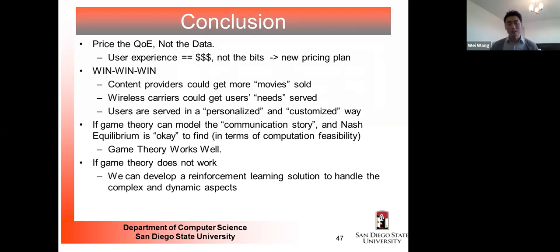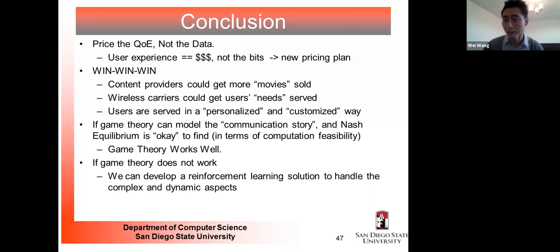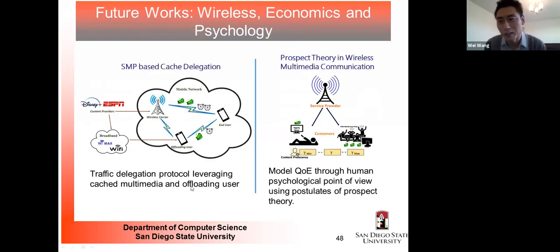In summary: using economic theory to design wireless networks, we price QoE-aware data — recognizing that different bits have different importance for decoding. This potentially creates a win-win-win: content providers sell more content, wireless carriers better serve users, and users get more personalized quality. Game theory solves this effectively when tractable; machine learning is a powerful alternative when game theory is hard to apply.